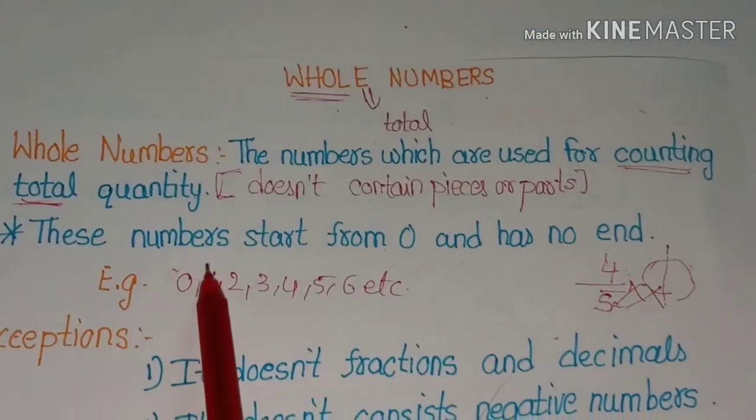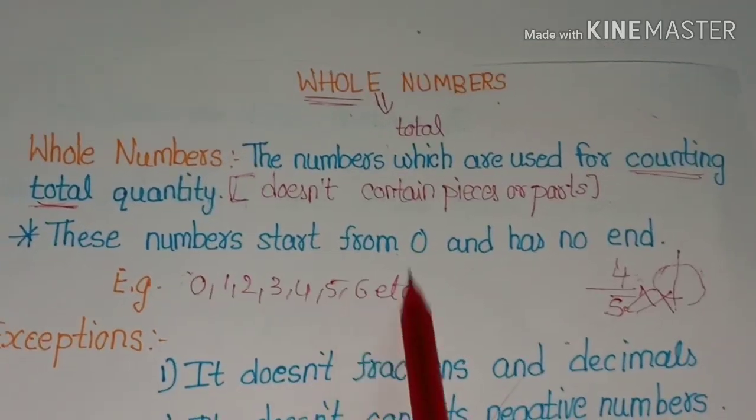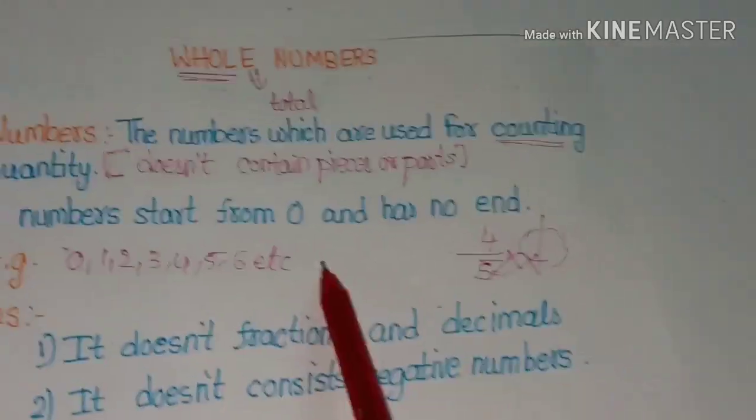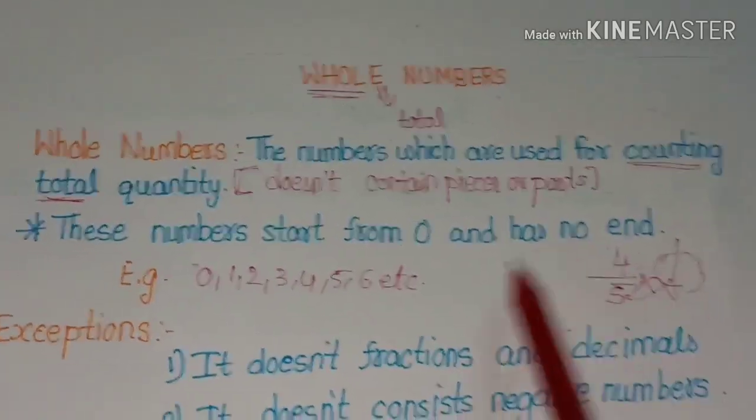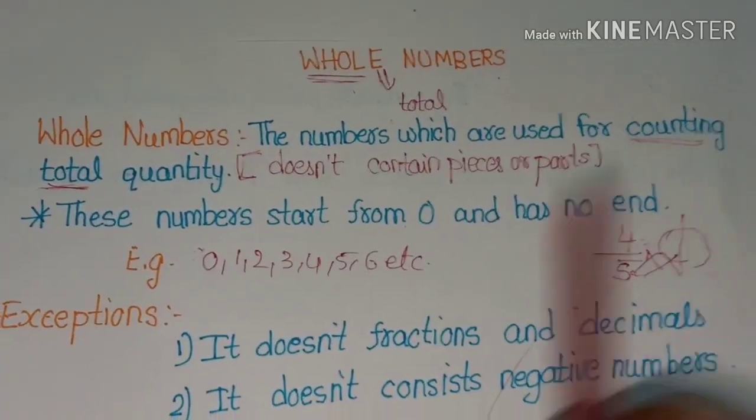So the examples of whole numbers start from 0, 1, 2, 3, 4, 5, 6, and so on — they go on forever.